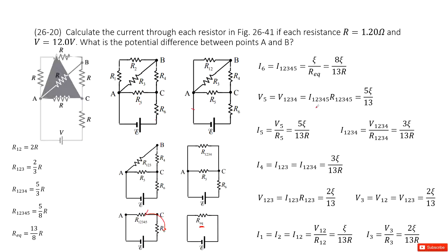We use epsilon divided by the equivalent resistance to get the current. With I6 known, we keep going to find I5. We need the voltage from point A to point C: V5 equals V1.2.3.4, which equals I1.2.3.4.5 times R1.2.3.4.5. This gives 5 epsilon over 13.